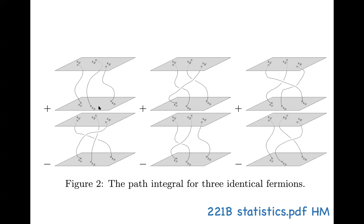If you have three particles, there are 3! = 6 ways of interchanging them. Three correspond to even permutations, and three others correspond to odd permutations. When you do the path integral over these possible paths, you assign a negative sign to odd permutations and a positive sign to even permutations, and sum over all possible interchanges for all possible particle paths — performing the path integral for identical fermions.